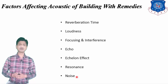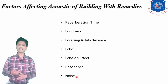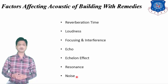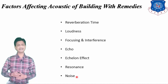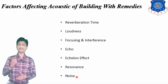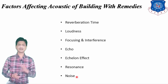The next factor is noise. There are three types of noise: airborne noise, structure-borne noise, and inside noise. The noise which comes from outside through open windows, doors, and ventilators is known as airborne noise. A room can be made air-conditioned to reduce that airborne noise.